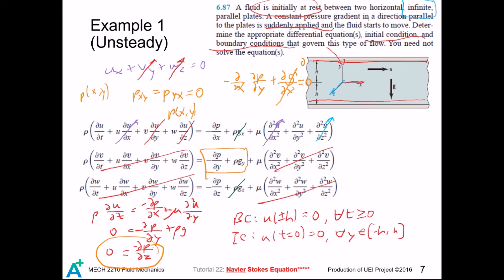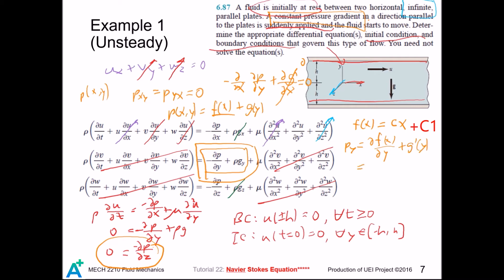So, we get pressure as a superposition of a function in x and a function in y, and this term is in fact linear. This is mentioned in the question — the pressure gradient applied is uniform. So, if we look at this equation again, this term is zero, and we get a simplified expression. We can conclude that the pressure is determined.